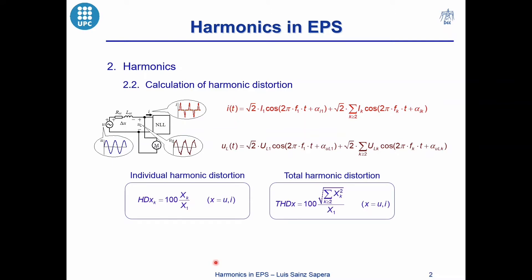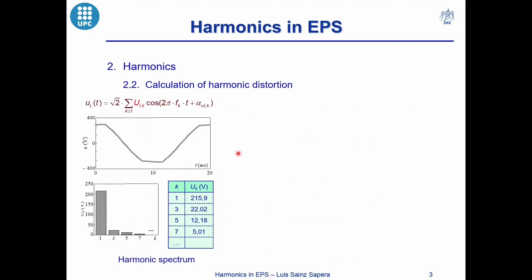Determining the distortion of the currents is useful to know the quality of a nonlinear device — that is, if the distortions are greater than 10%, the device is a very pollutant load. Determining the distortion of the voltages is useful to know the quality of the voltage at the point of common coupling or in the plugs — that is, if the distortions of the voltage are greater than 5%, the voltage waveform we receive is very polluted.